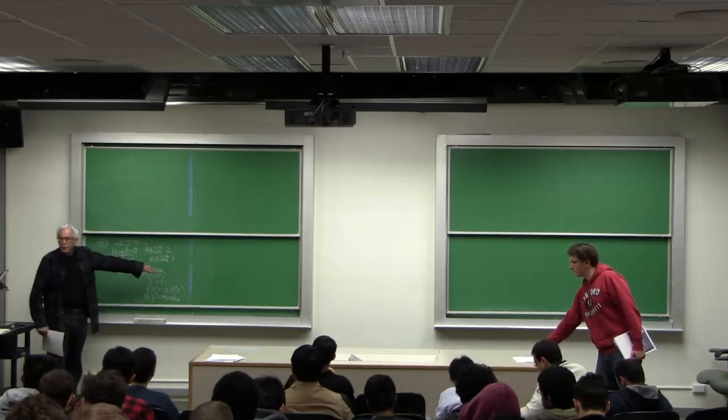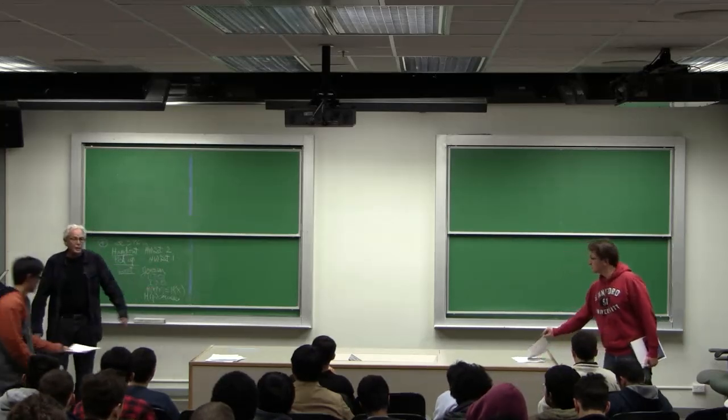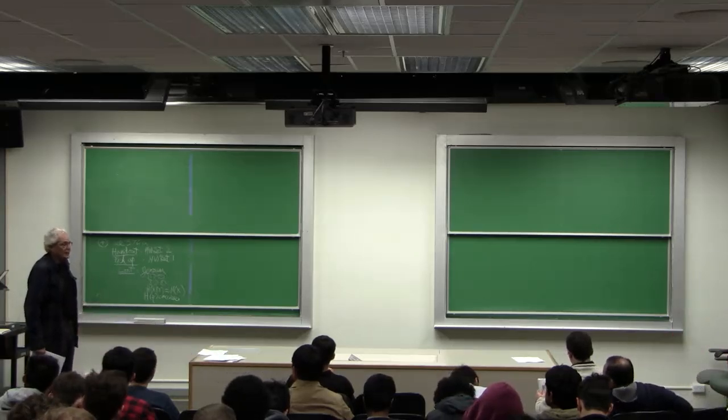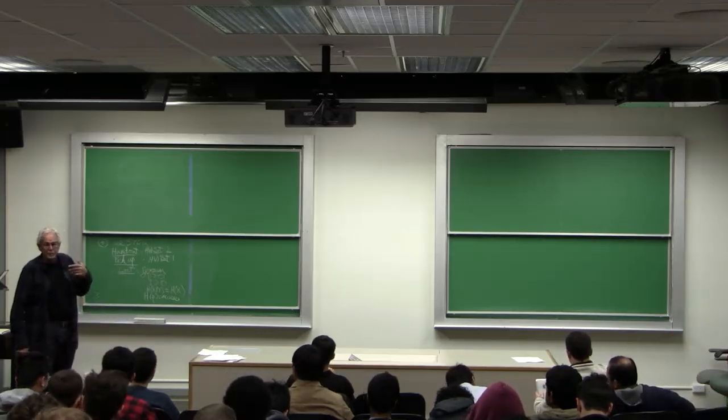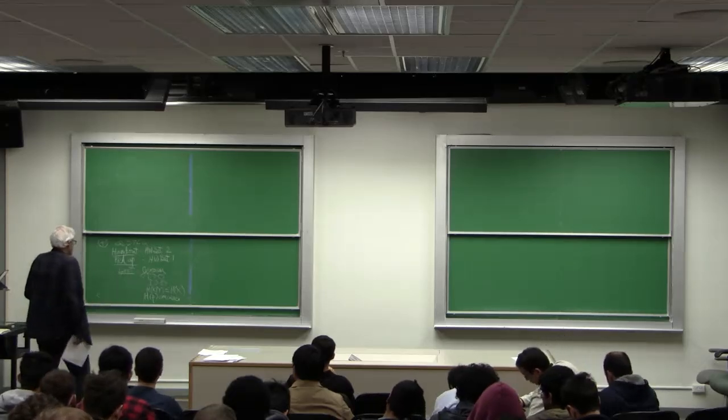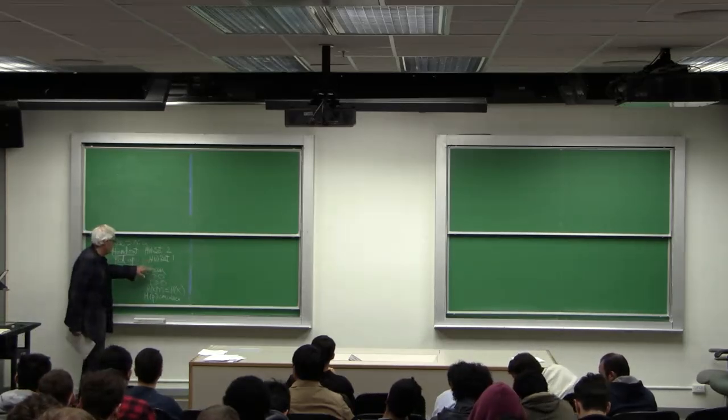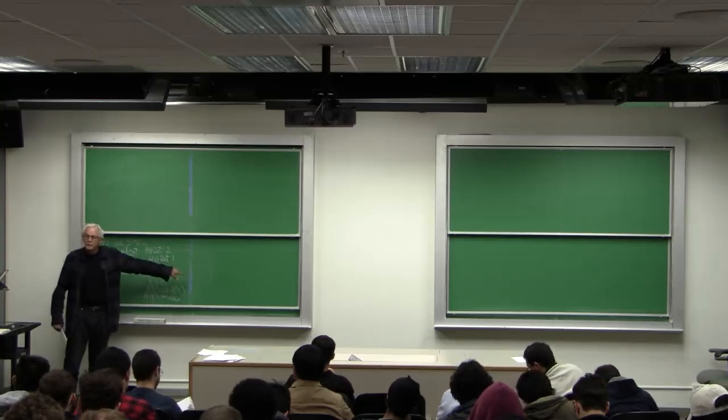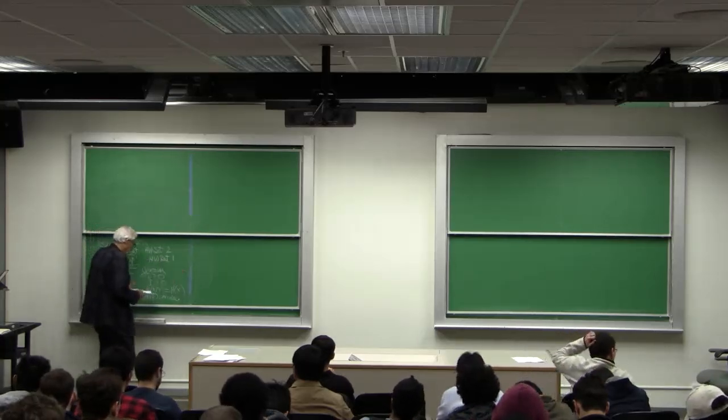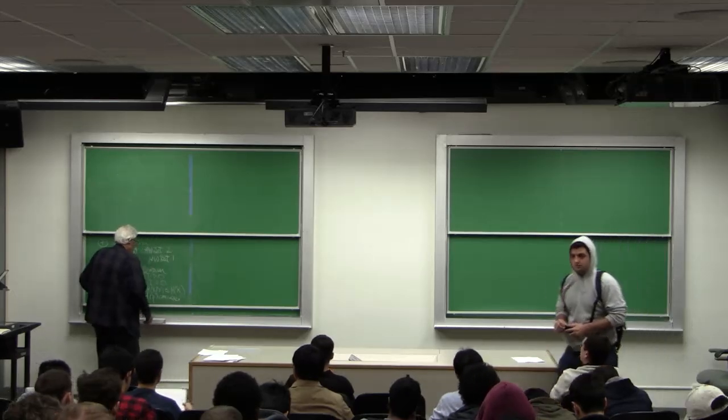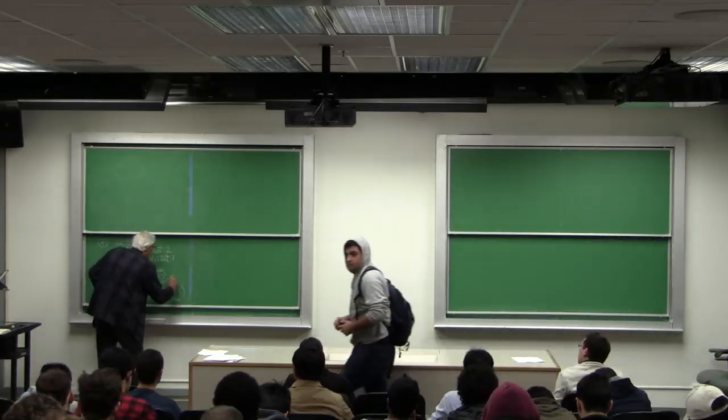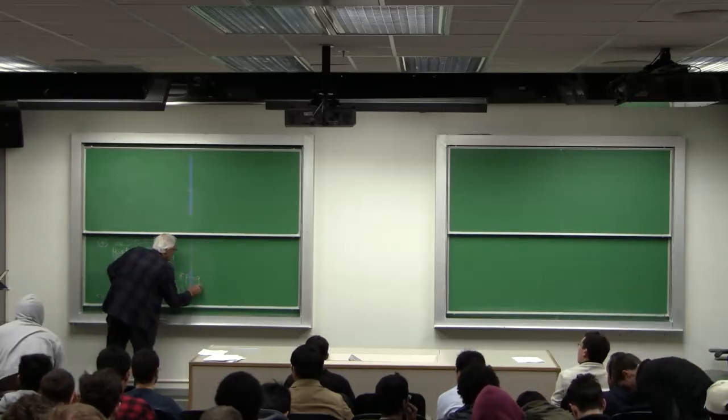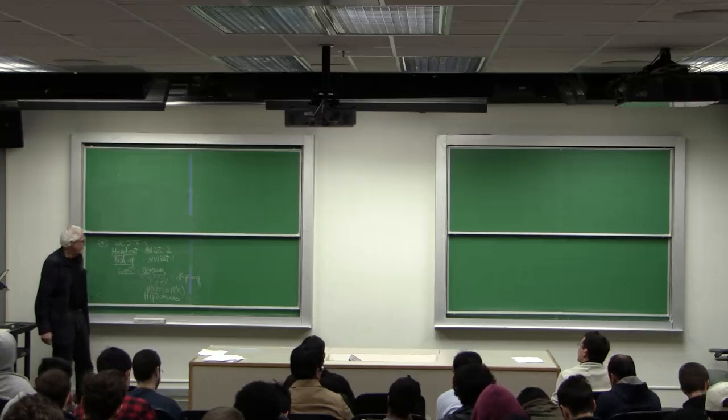Last time we looked at Jensen's inequality. It said the expected value of a convex function of something is greater than the function of the expected value. This has all sorts of applications. Among other things it shows the relative entropy is always non-negative with equality if and only if P equals Q, that is if the two distributions are equal.